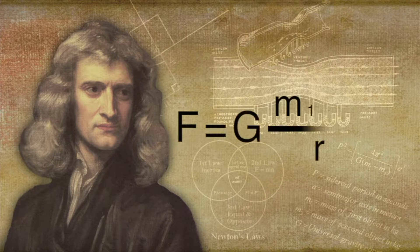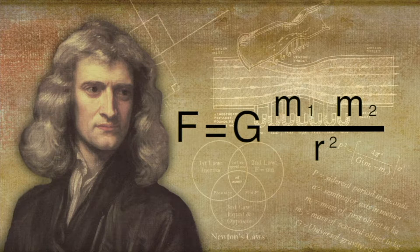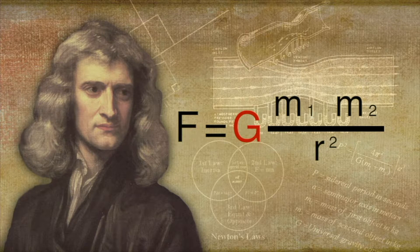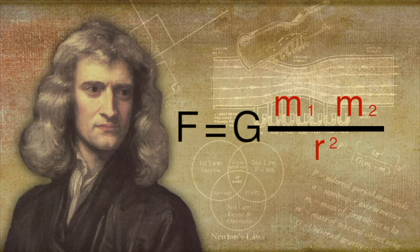Newton showed that the force of gravity, F, between two bodies is proportional to the gravitational constant G, multiplied by the product of the two masses attracted to each other divided by the square of the distance, r, between them.